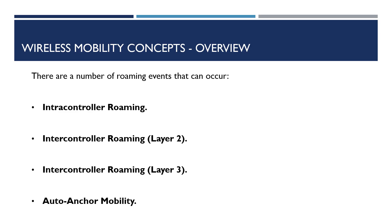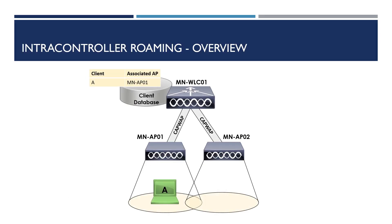Let's break each one of these roaming events down to understand how they occur and what takes place in the background. Starting with intra-controller roaming: this roaming event occurs when a client roams between access points associated to the same controller. In our example, we have two access points, AP01 and AP02, associated to a single wireless controller, WLC01. The controller maintains a client database containing information on how to reach all clients. When client A roams from AP01 to AP02, the controller updates the client database. Intra-controller roaming is one of the simplest methods of roaming.